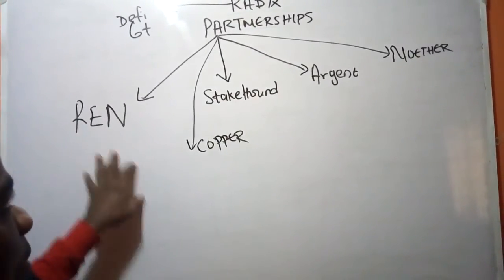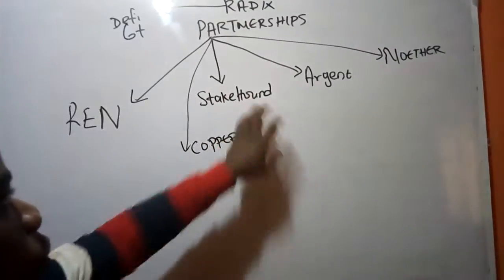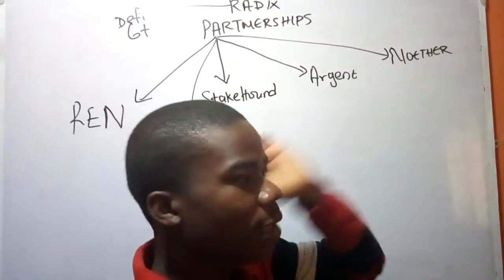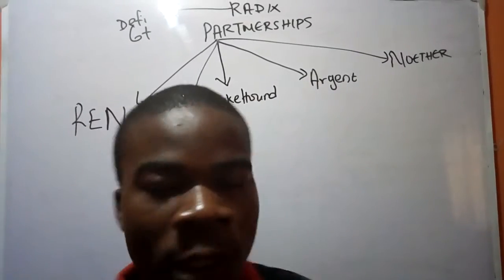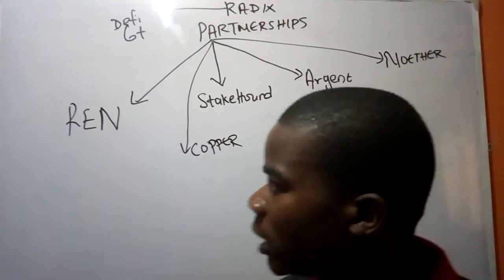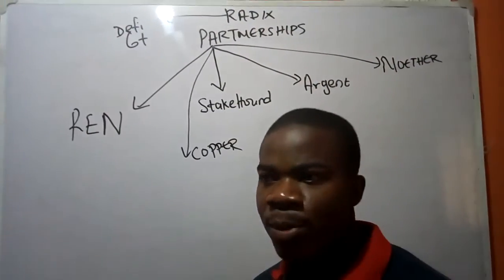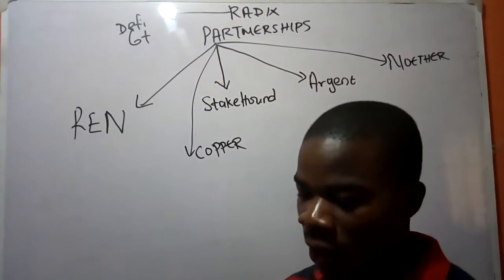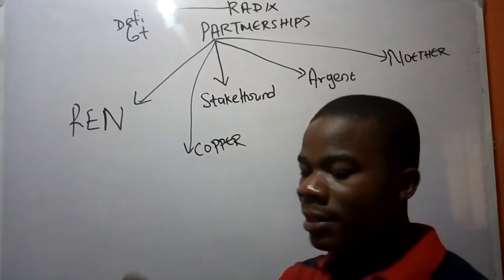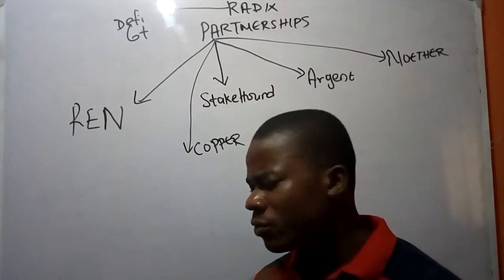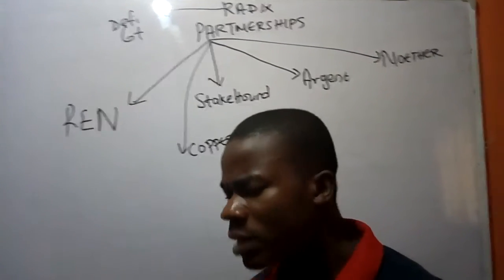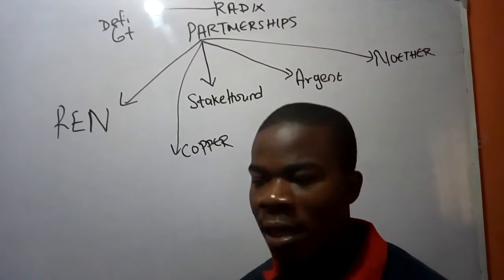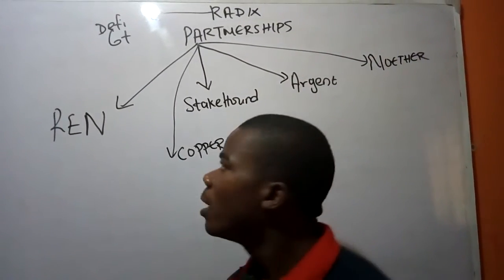We have Rain, Stakehood, Copper, Argent, and NoEater. We will touch briefly on each of their partnerships. These are not just nominal partnerships — sometimes you read that X is partnering with Y and you cannot even know what they are doing. There are no details about what they do.